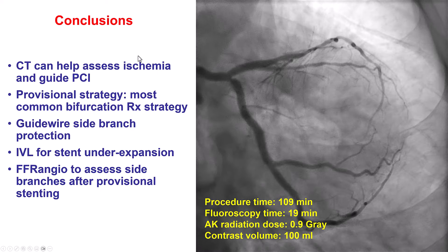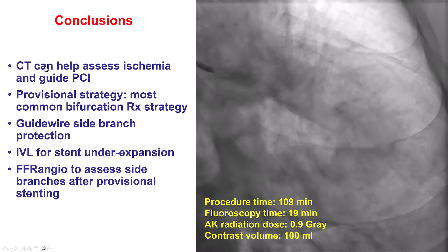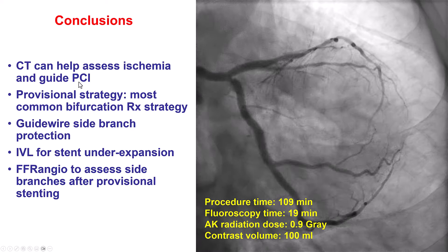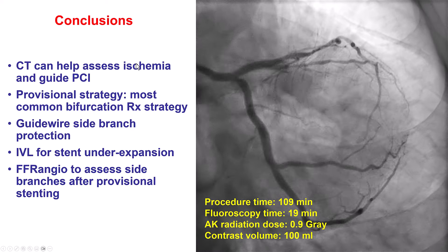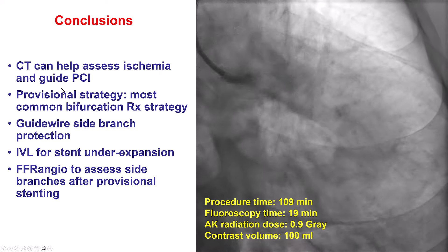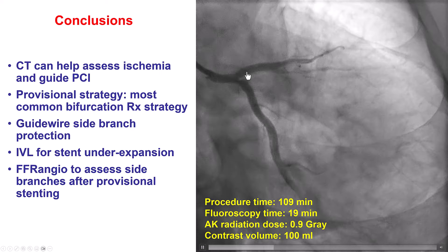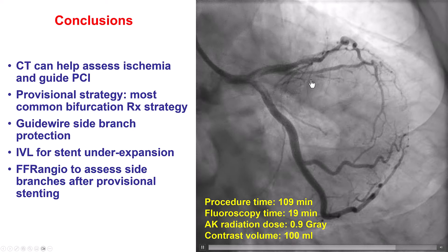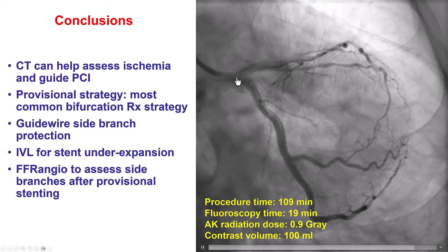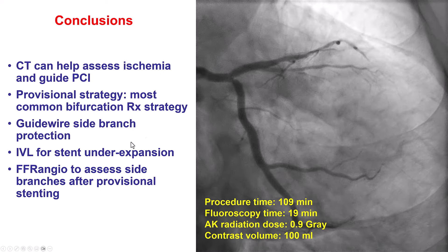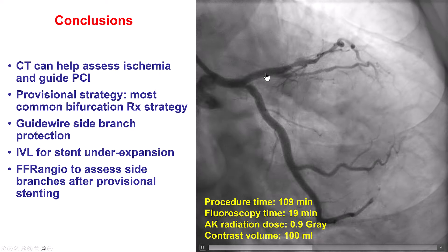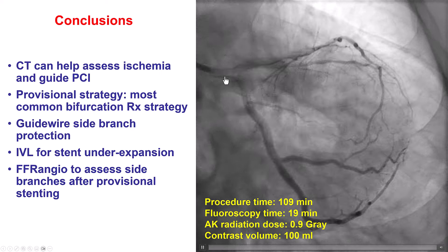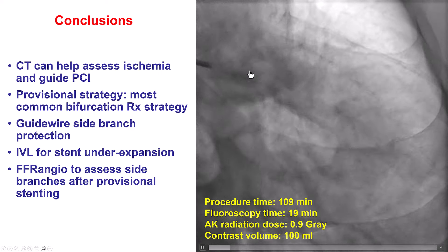Several learning points from this case: First, coronary CT angiography can guide PCI planning. Here, the lesion was clearly highly stenotic, so additional ischemia assessment was not needed. We used provisional stenting since the diagonal and circumflex did not have significant disease, but we protected both branches. We identified stent underexpansion on imaging and used intravascular lithotripsy. Finally, FFR angio was used to assess both the diagonal and circumflex — no intervention was needed for the diagonal, but kissing balloon inflation was performed in the LAD and circumflex.